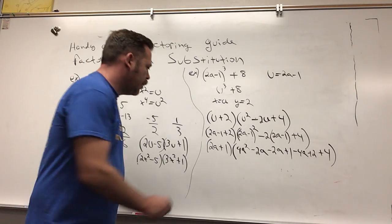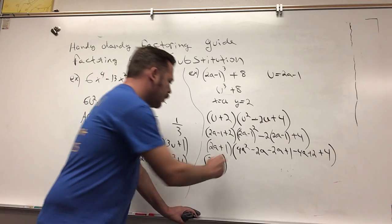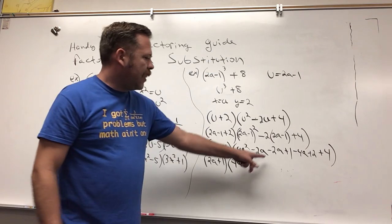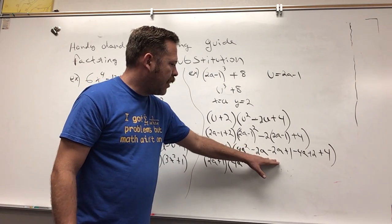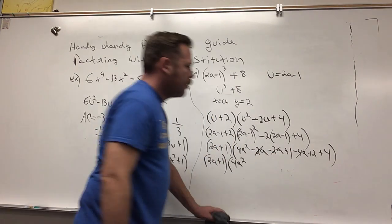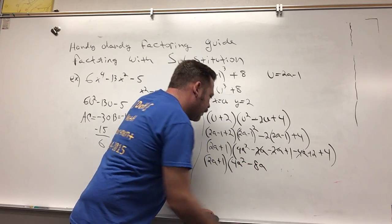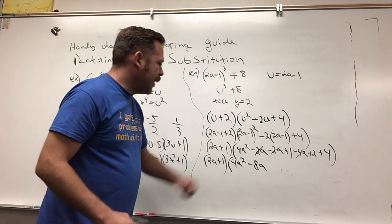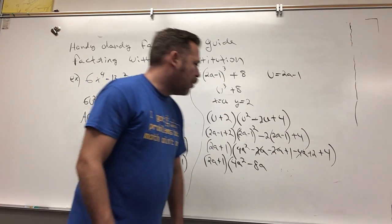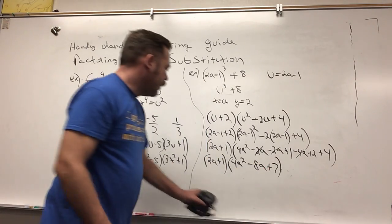Now we're almost done, the hard part's over. We just gotta combine like terms. I have 2a + 1 here, and then 4a². I have negative 2a minus 2a, which is negative 4a, minus 4 more a, so I'm going to cancel those out. That's negative 8a. That takes care of all my a²s and all my a's. I just have 1 + 2 + 4, which is 7.